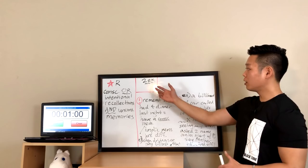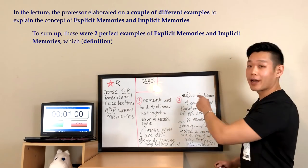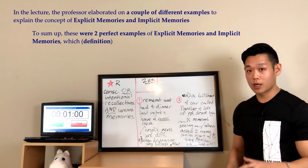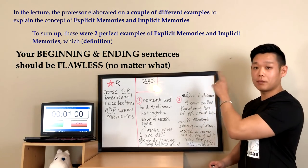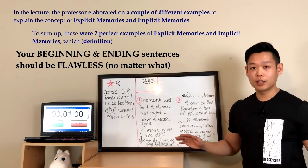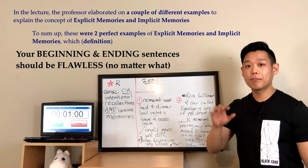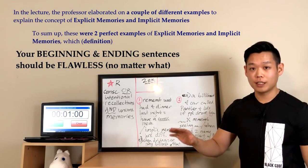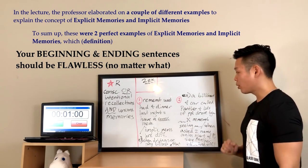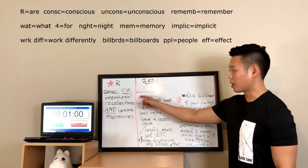No matter how confusing the lecture's information was, you should be able to say the beginning and ending sentences without making any mistakes. Your first and last impressions should be perfect or flawless, even before you start working on the middle details. Now let's look at the details, starting with: 'To begin with, most people remember what they had for dinner last night, so these people have a conscious memory.'